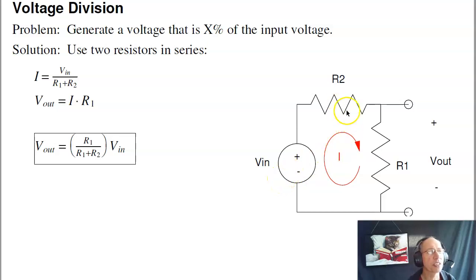Voltage Division says I can calculate how much less it is just by looking at the resistors. What I can do is find the current. The current is Vin divided by R2 plus R1. The output voltage is R1 times I, which substituting is R1 over R1 plus R2 times Vin.